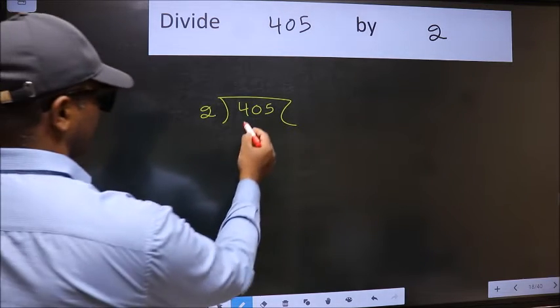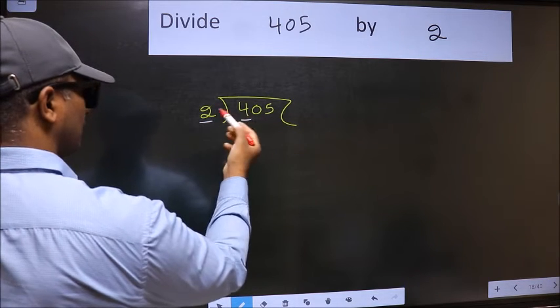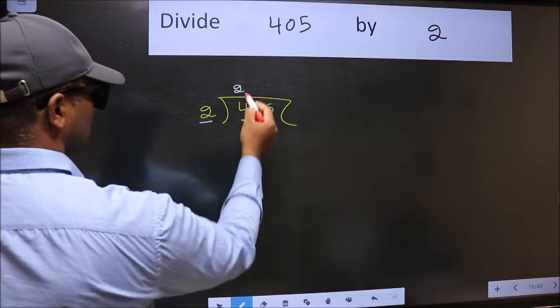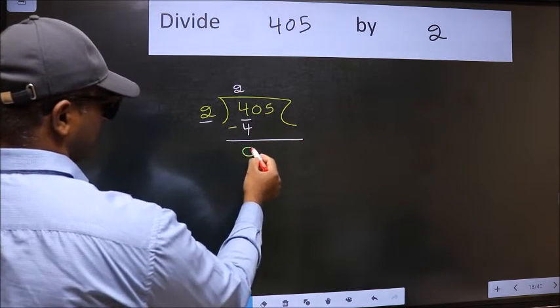Next. Here we have 4 and here 2. When do we get 4 in 2 table? 2 times 2 is 4. Now we should subtract. We get 0.